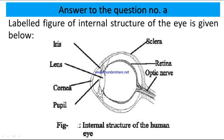Here is the figure — the labeled figure of the internal structure of the human eye. This part is the lens, this is the pupil, this is the cornea, this is the iris, this is the sclera, this is the retina, and this is the optic nerve.